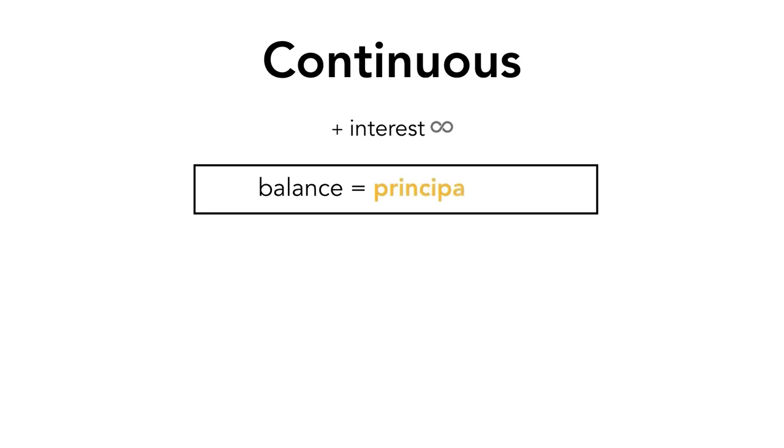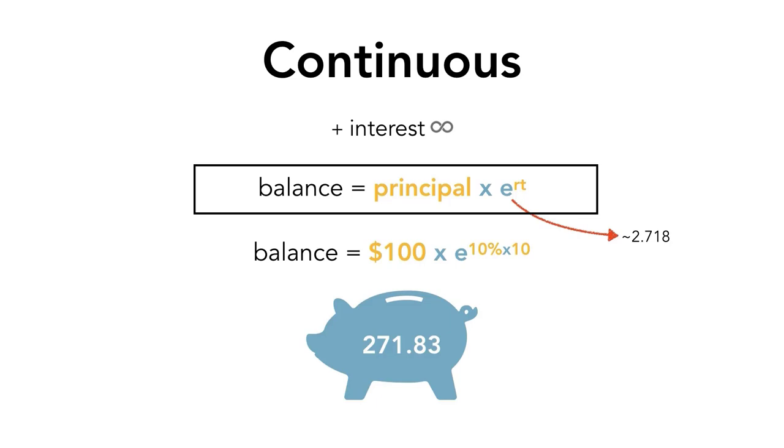Lastly, we will talk about continuous compounding. This means that the interest we earn is added to our investment continuously. Theoretically, it will be compounding not only every second, but every millisecond and even shorter than that. This type of compounding has its own formula, which is the principal times e to the power of r, the interest rate, times t, the number of periods. e is the magical number in math that equals approximately 2.718. After continuously compounding for 10 years, the balance in your account will be $271.83.